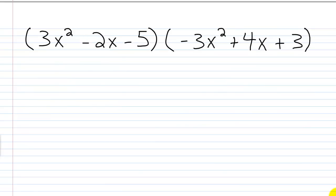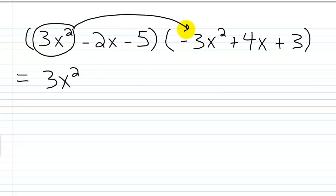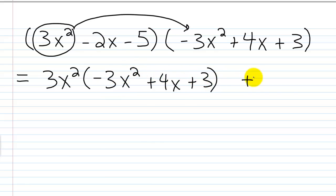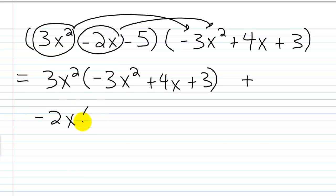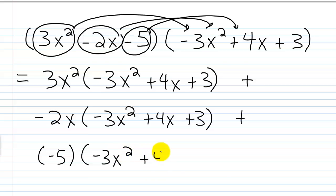Now we want to look at something a little more challenging: multiplying a trinomial by another trinomial. Same principle — take each term from the first polynomial, which are 3x squared, negative 2x, and negative 5, and multiply by each term of the second polynomial. So we start with 3x squared times negative 3x squared plus 4x plus 3, then plus negative 2x times negative 3x squared plus 4x plus 3, then plus negative 5 times negative 3x squared plus 4x plus 3.